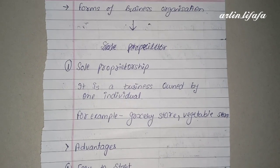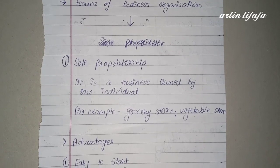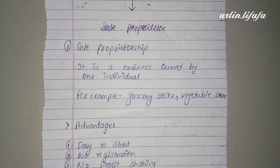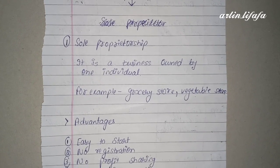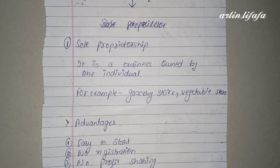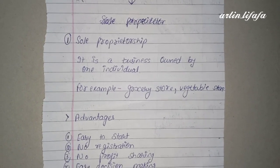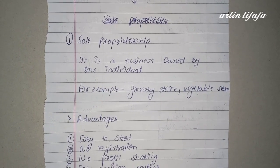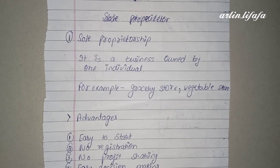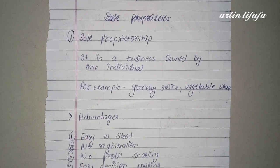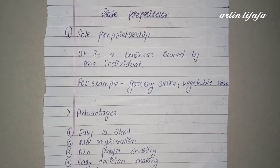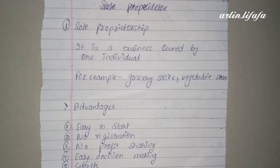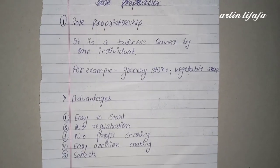The first form is sole proprietorship. Sole proprietorship basically means where a single person owns and establishes a business. It is a business owned by one individual where there is only one owner who establishes and runs the business. For example, a grocery store or vegetable shop where there is only one owner — we call it sole proprietorship.